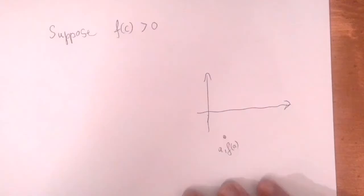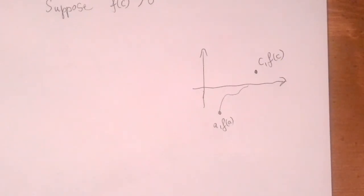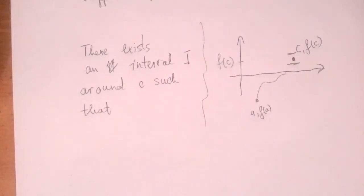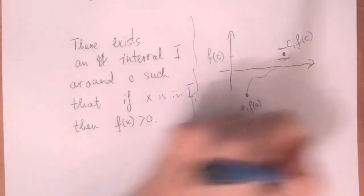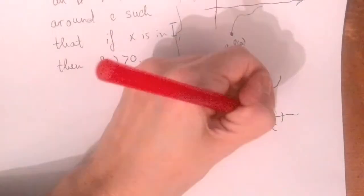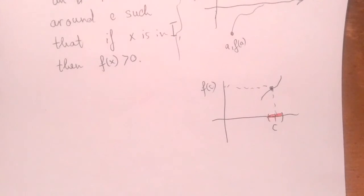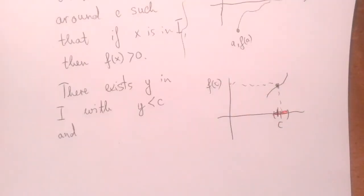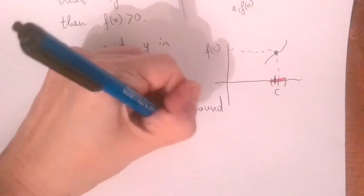Let us suppose first that f of c is positive. Here we have the point a, f of a, and then here is c, f of c. If this function is continuous, that means there exists a two-sided limit, and the function values get arbitrarily close to f of c. If f of c is a positive number, there exists an interval i around c such that if x is in i, then f of x is positive. Here is the continuous function f, and if f of c is positive, there exists an interval containing c such that the function is positive on that interval.